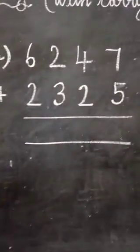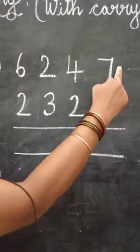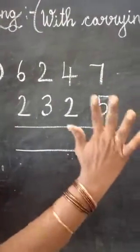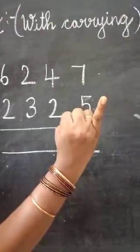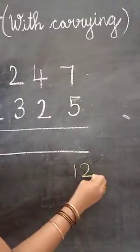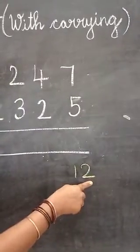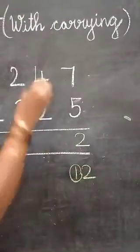Yes, start from one's place. 7 in the mind, 5 in the finger. After 7: 8, 9, 10, 11, 12. 2 digits. See here, I am getting 2 digits. In this, I am going to write only one's here: 2. And this tens should be carried to the next number.